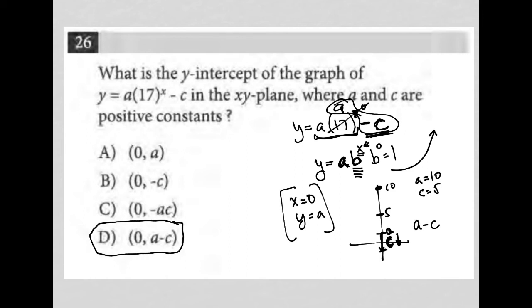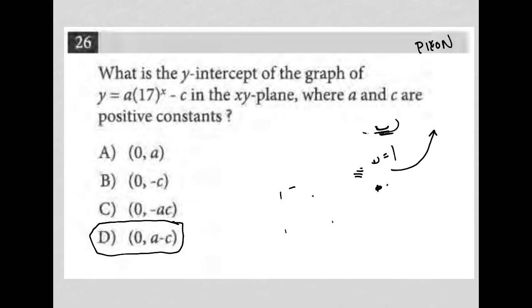Another way to think about this, and I'm kind of doing it already, and I should have mentioned this in the beginning, we could definitely use a strategy called plug in your own number. So using that strategy is very useful, especially for a question like this. And the reason why I know that I can use that strategy is because of having the variables in the answer choices. I can say, well, I'm going to say a is equal to 2, and let's see, and I'm going to say c is equal to 3. So that means y equals 2, parentheses 17, to the x minus 3 is my new equation.